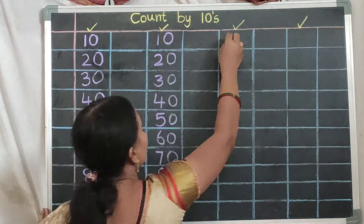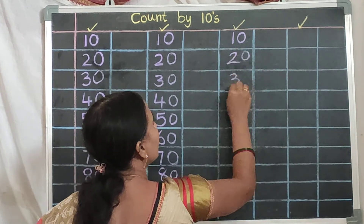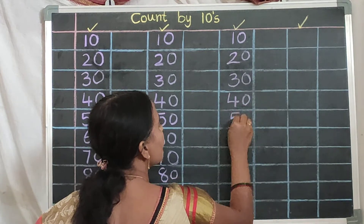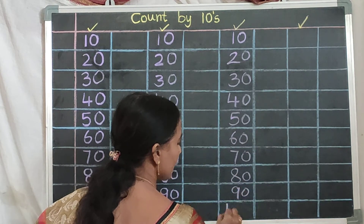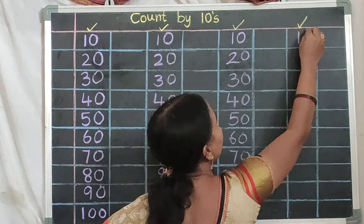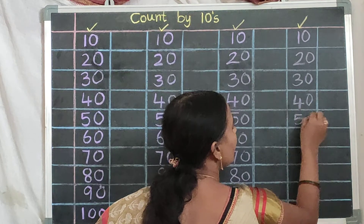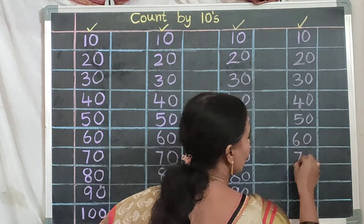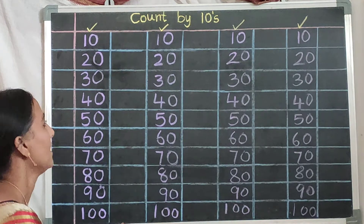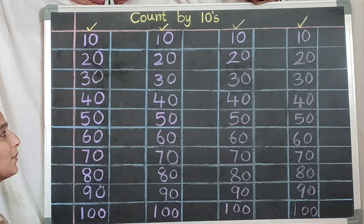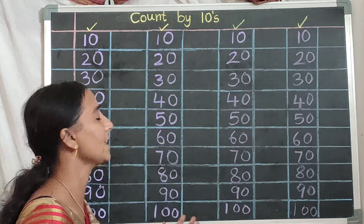Like this you should practice, children, while reading, you should write. Go to next slide. See here — like this you should complete your notebook page. All of you practice count by tens. First read the heading count by tens, then after you should practice all these numbers.